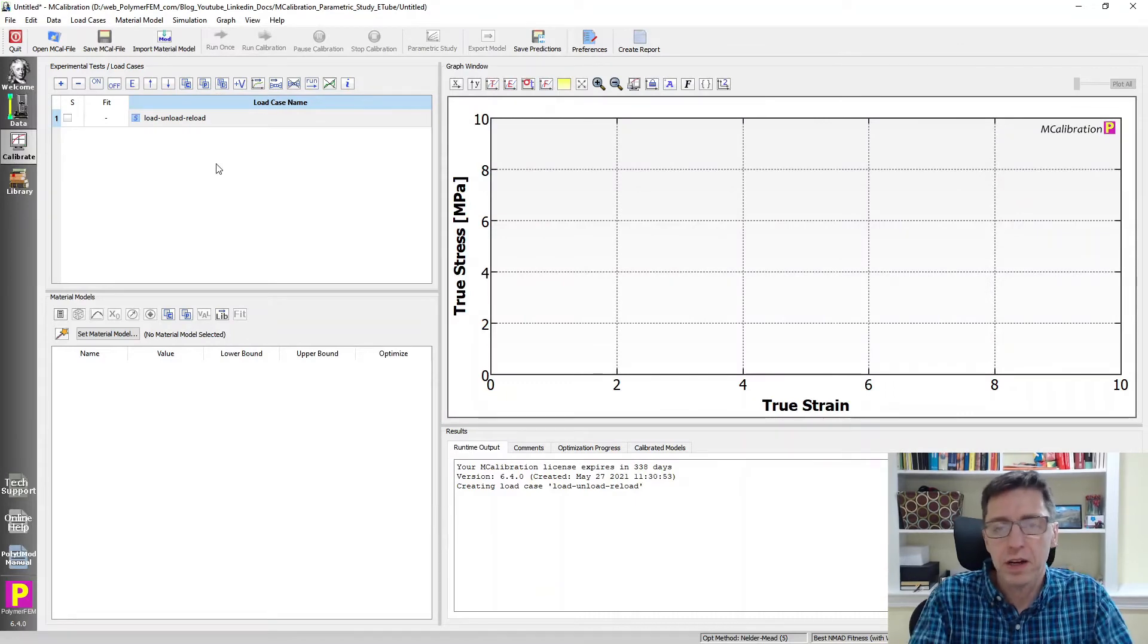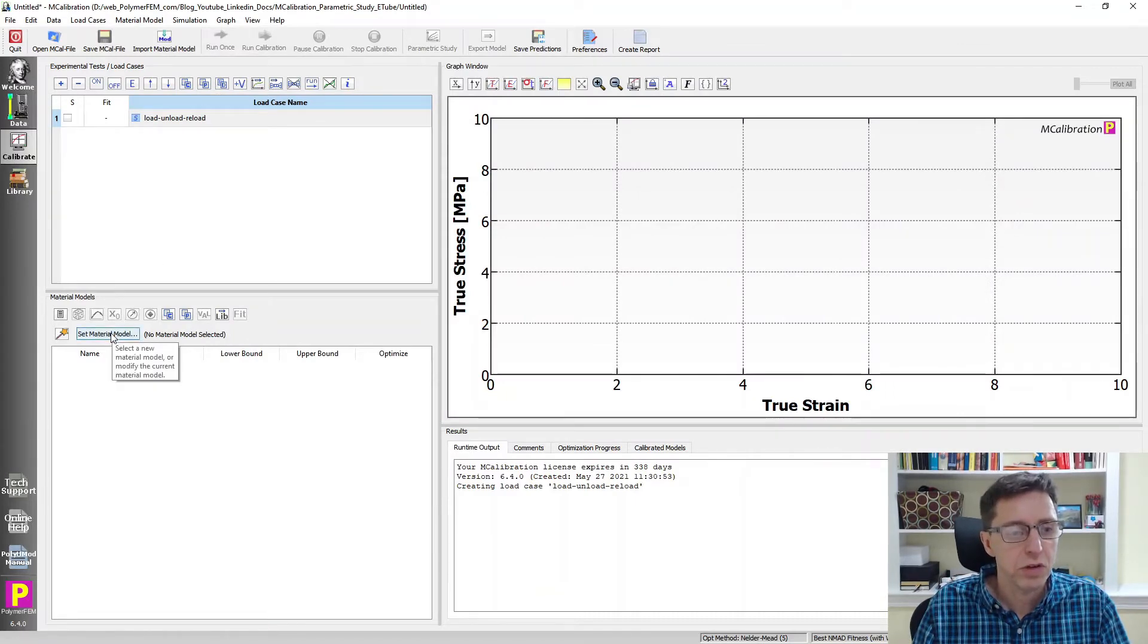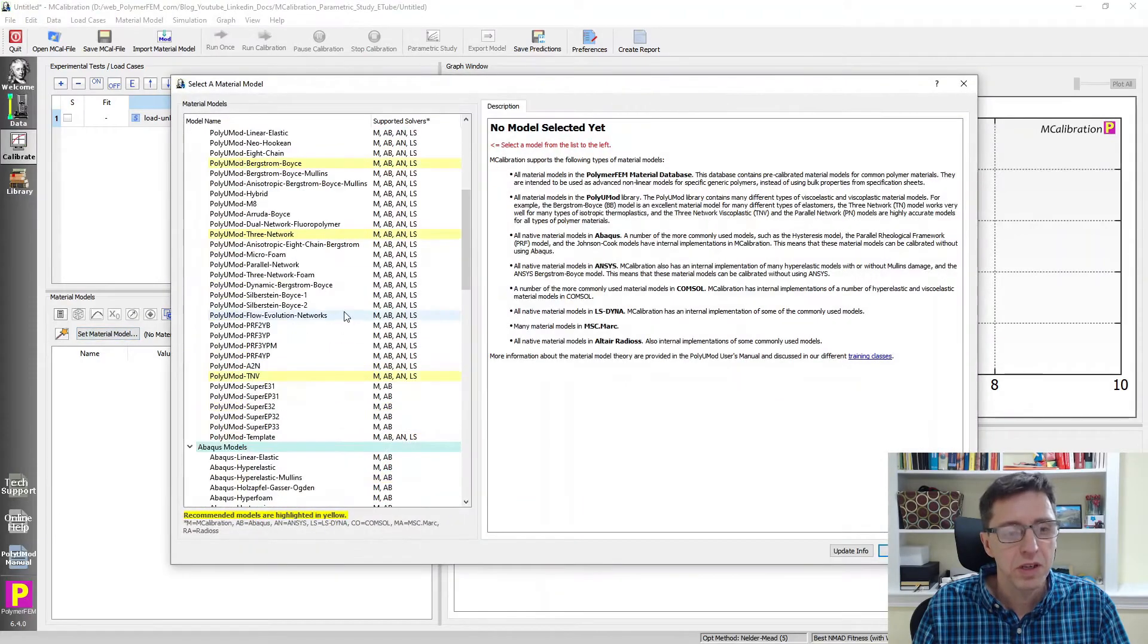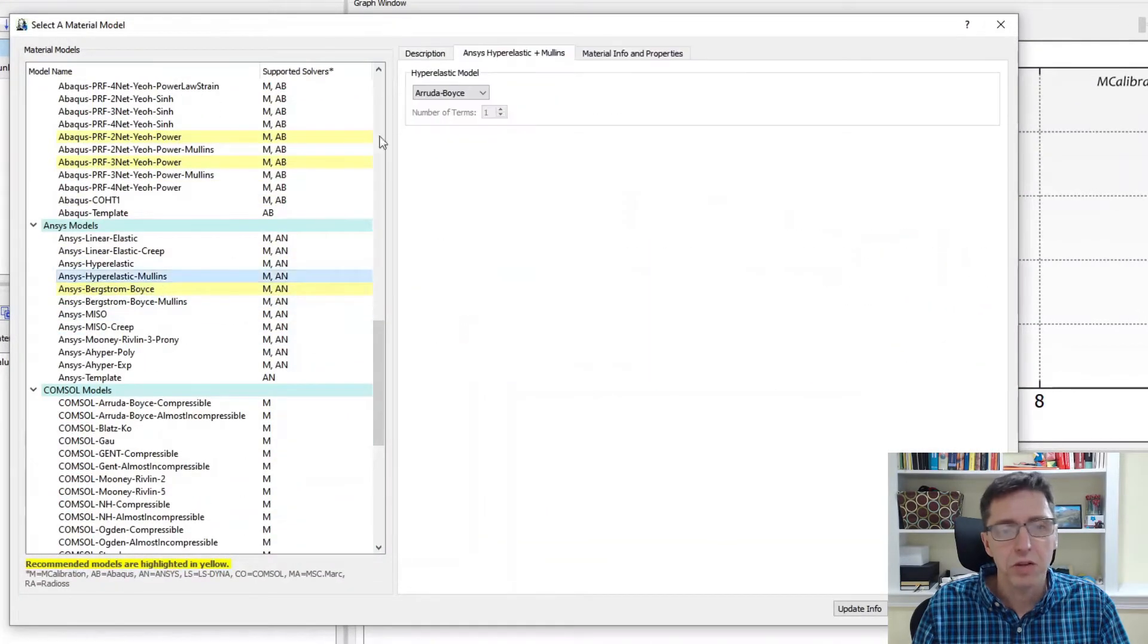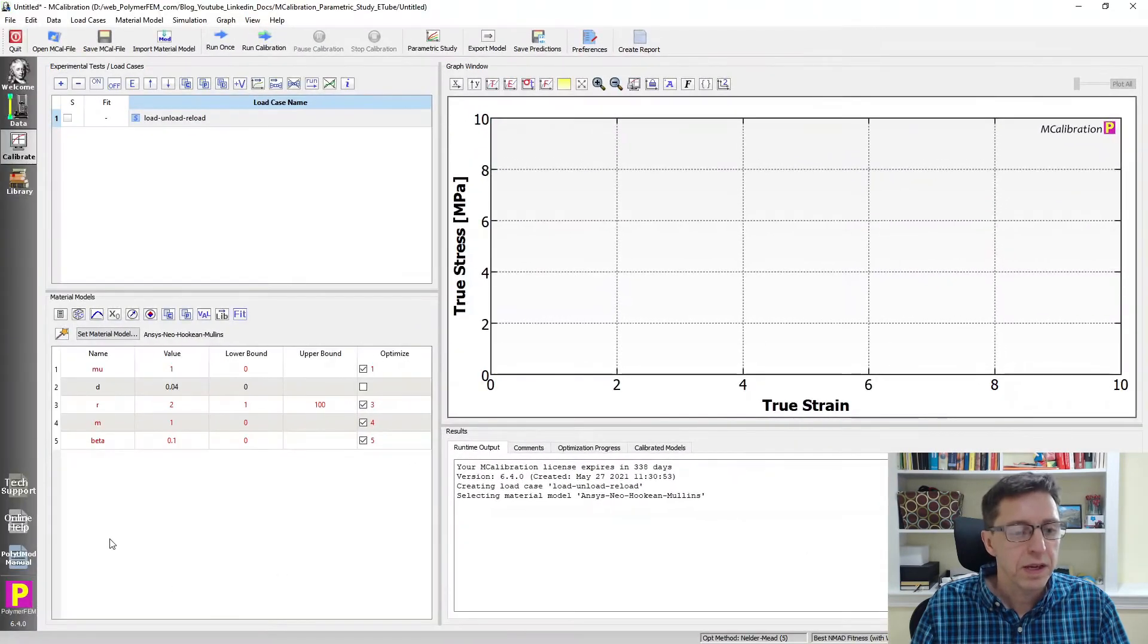We now have to select our material model that we want to analyze here and demonstrate. So I'm going to click on set material model. I'm going to use the ANSYS hyperelastic model. We have a number of different hyperelastic options here. I'm going to pick one of the easiest ones so we don't get confused on some of the hyperelastic parameters. So you're going to see neo-Hookean here. And here you can see that this material model has a shear modulus, a compressibility parameter d, and then these three Mullins parameters r, m, and beta.